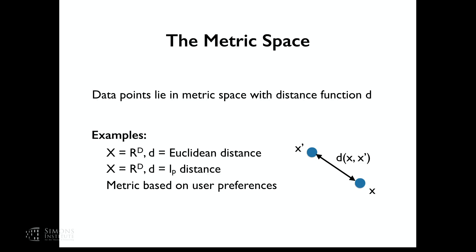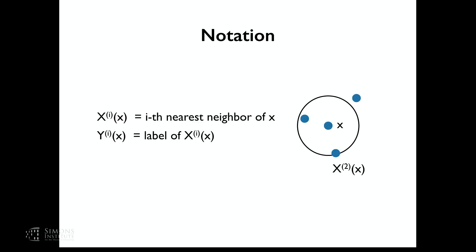What makes this algorithm very powerful is that you can have your favorite metric and your favorite objects and use this algorithm. The notation I'll use: x superscript i of x means the i-th nearest neighbor of x — think of these as order statistics. And y superscript i of x is the label of this i-th nearest neighbor.